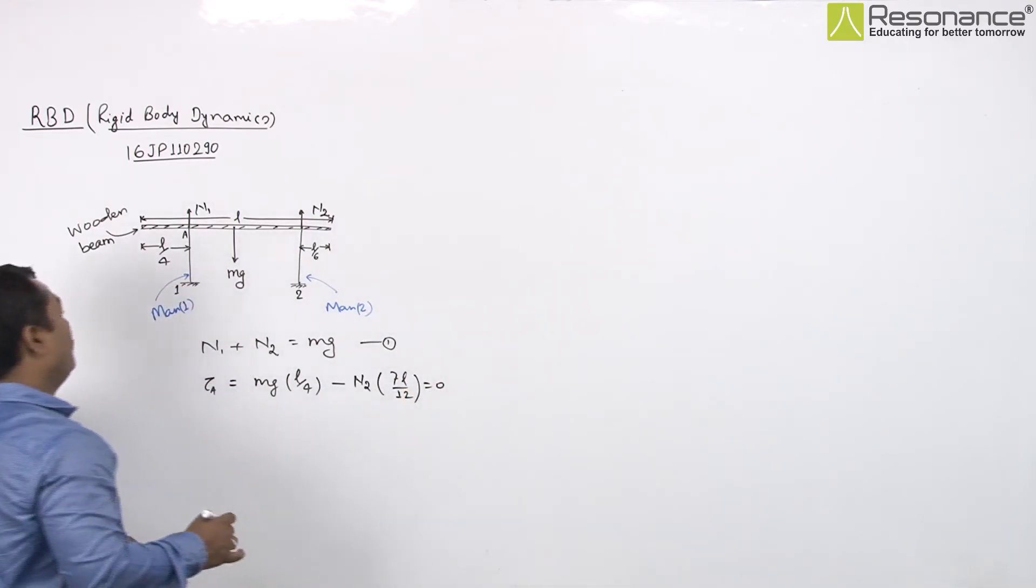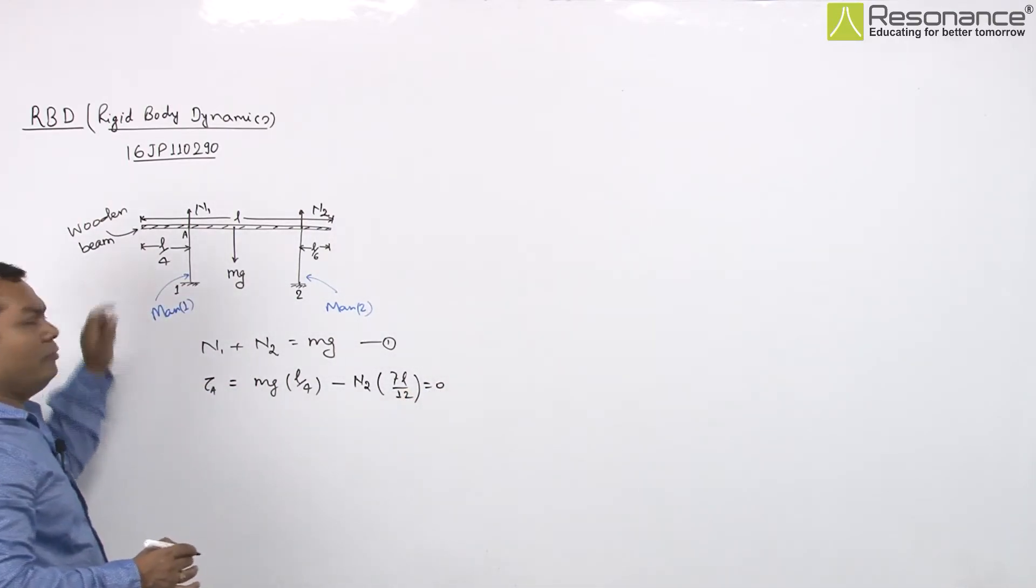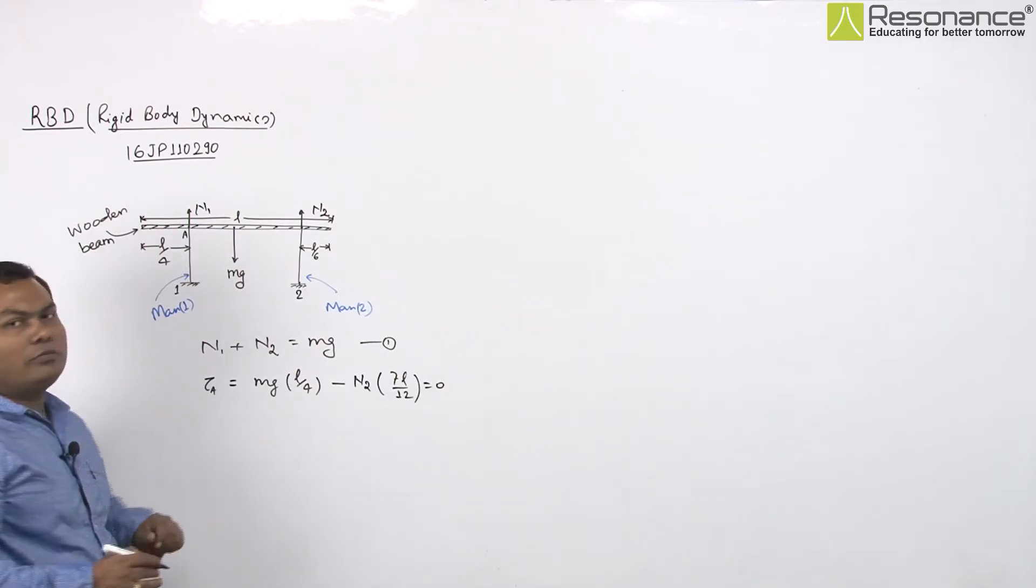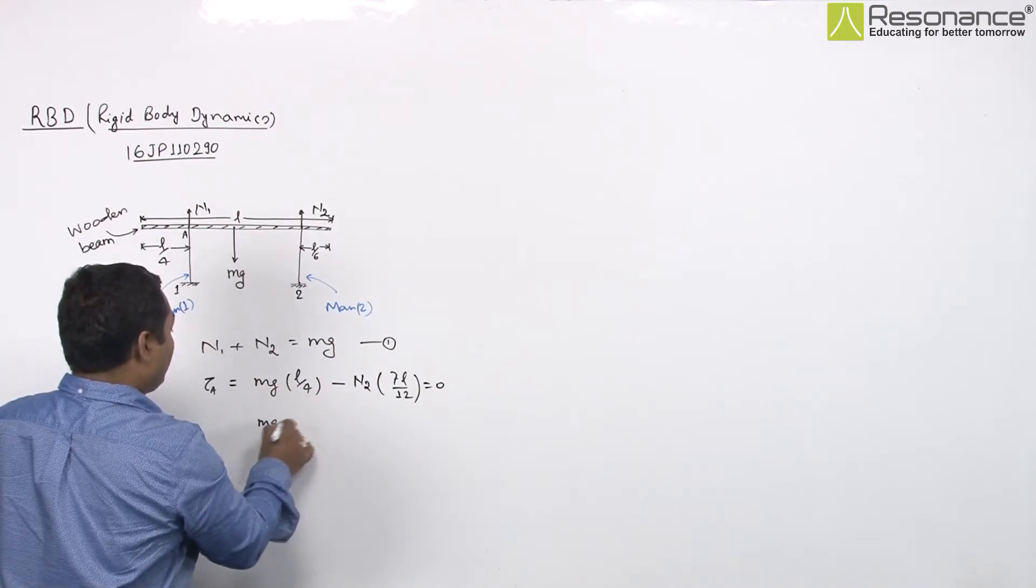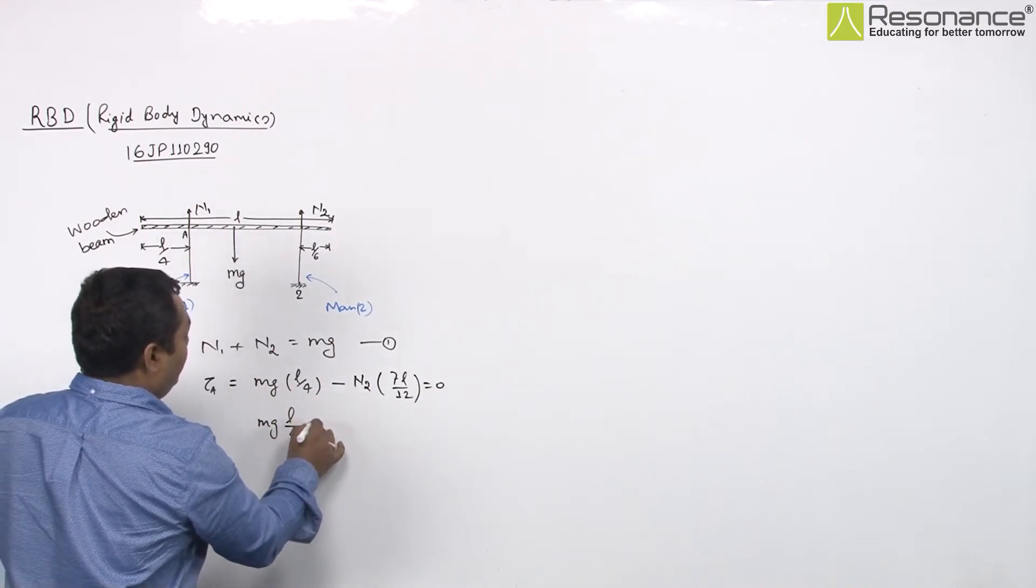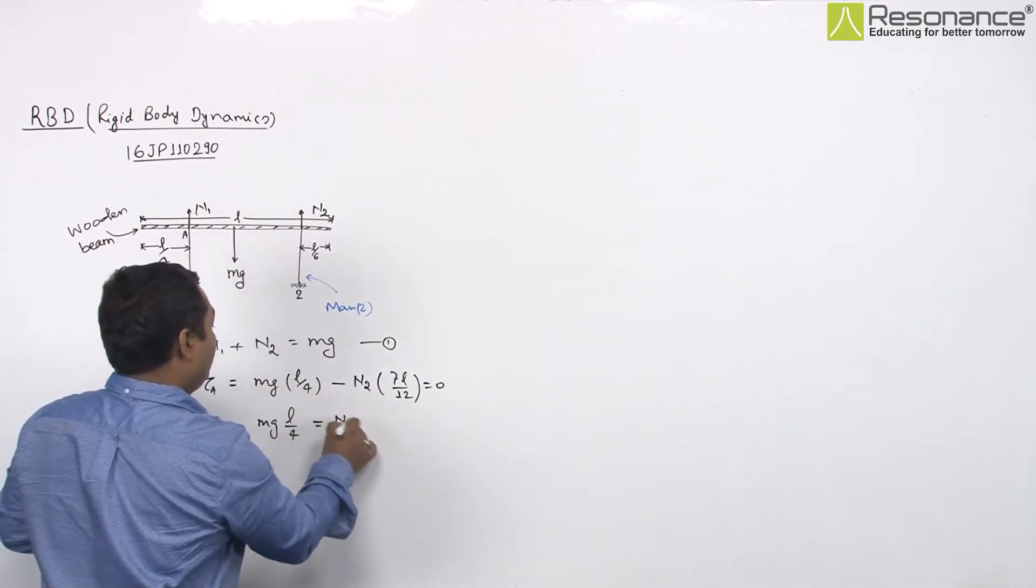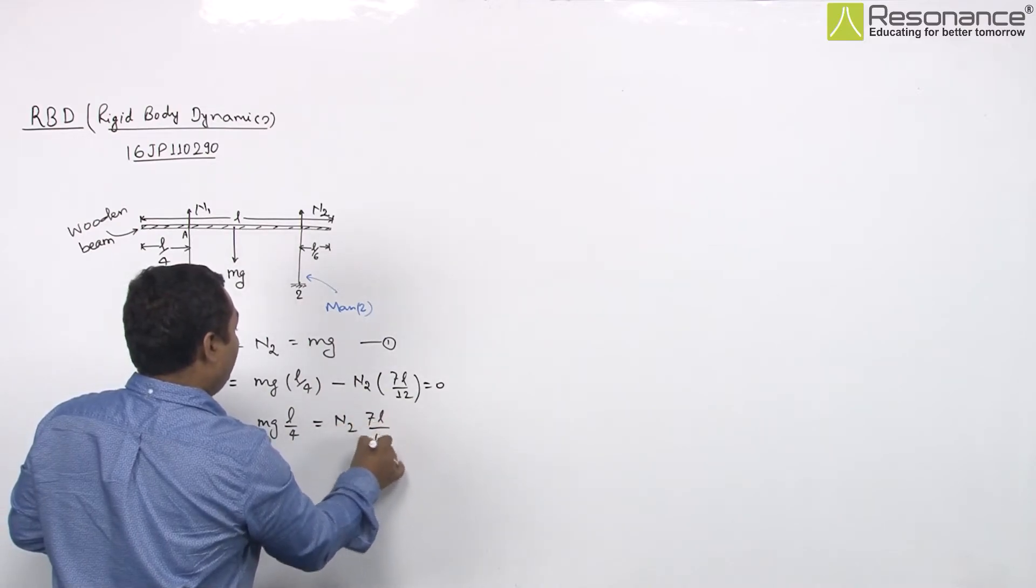Why? Because this wooden beam is in equilibrium, so rotational equilibrium must also be there. By solving this we get Mg times L/4 equals N2 times 7L/12.